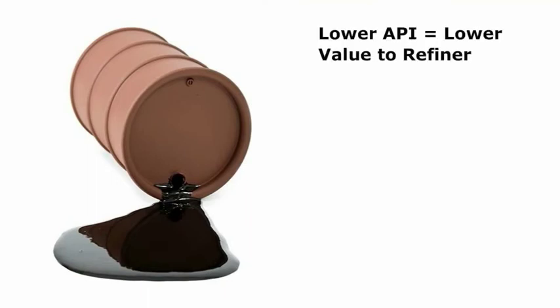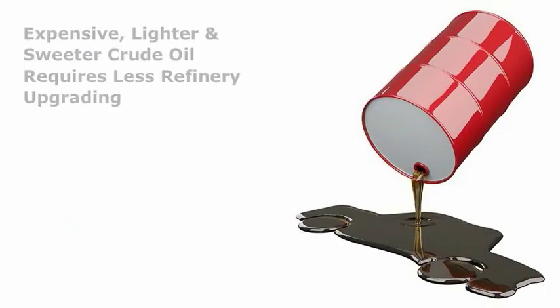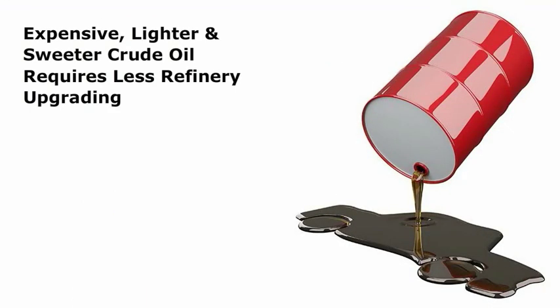Therefore, the lower the API of a crude oil, the lower the value it has to a refiner because it will either require more processing or yield a higher percentage of lower valued products such as heavy fuel oil, which can often sell for less than crude oil. Using more expensive lighter and sweeter crude oil requires less refinery upgrading.